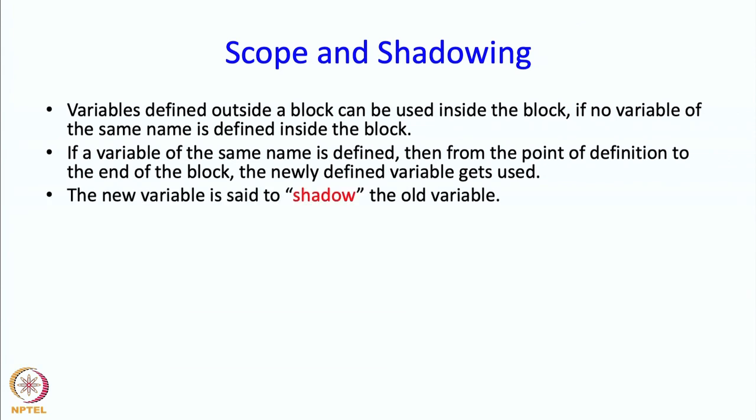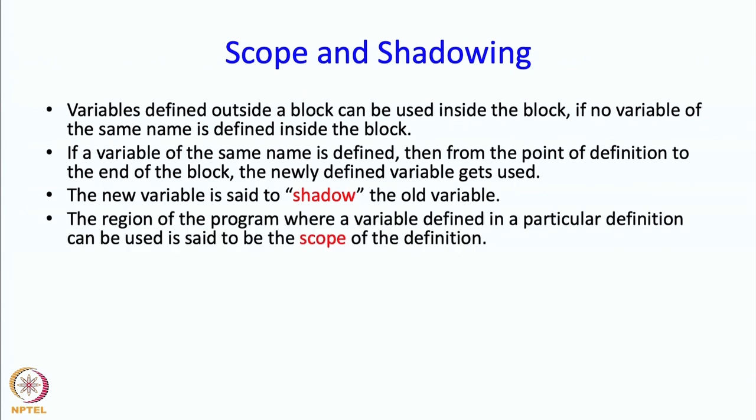What is happening is that the new variable is set to shadow the old variable. The region of a program where a variable defined in a particular definition can be used is said to be the scope of the definition. The scope of a variable defined inside a block starts at the point of the definition and ends at the end of the block.